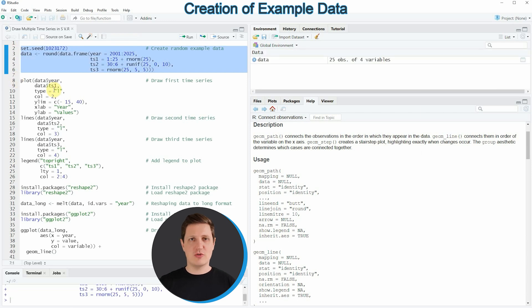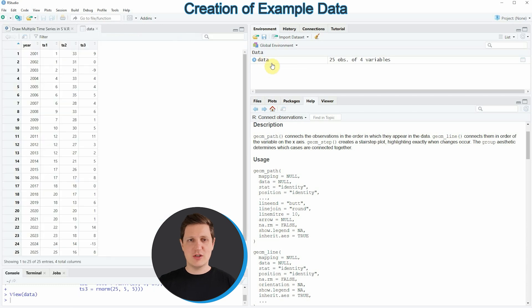So if you run these lines of code you can see that at the top right of RStudio a new data frame object appears which is called data. If you click on this data object you can see that a new window opens which is showing the structure of our data. As you can see, our data frame consists of four columns whereby the first column is containing different years and the columns 2 to 4 are containing three different time series objects.